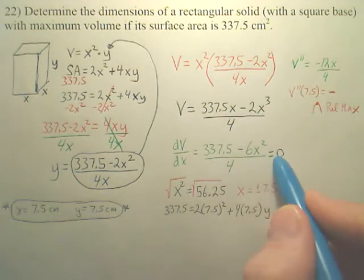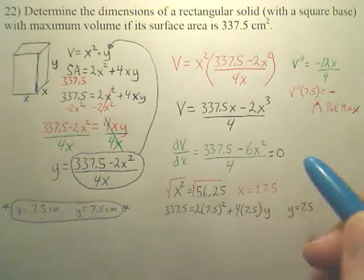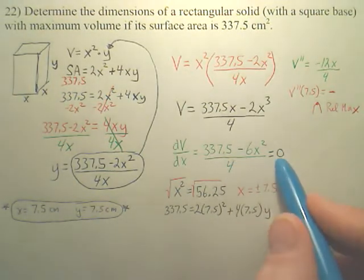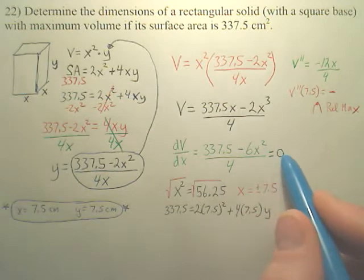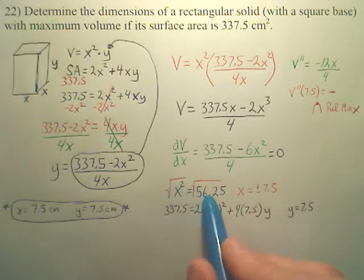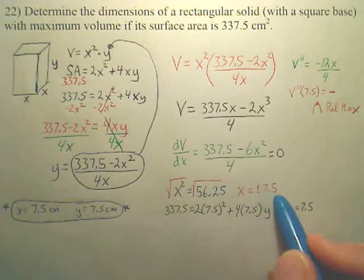When I set this equal to 0, because I want to know maxes and mins - actually, we want to know maxes. When we set it equal to 0, when you solve this equals to 0, you get something that looks like this. And when you square root, you get positive or negative 7.5.